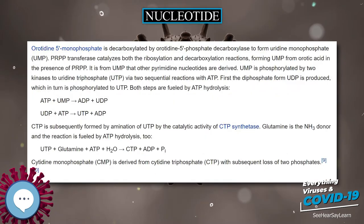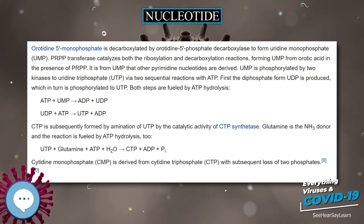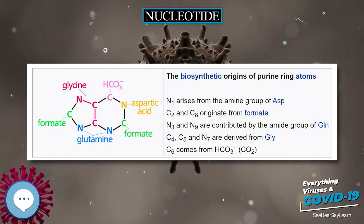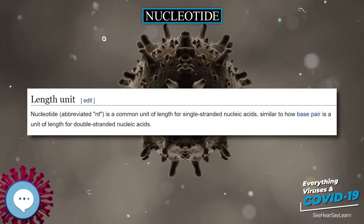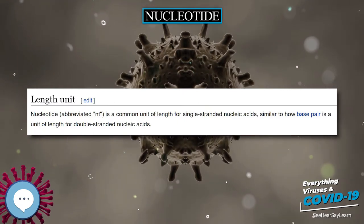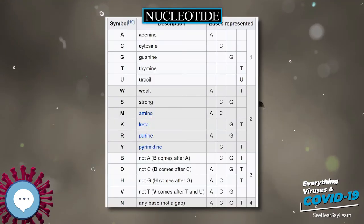In experimental biochemistry, nucleotides can be radiolabeled with radionuclides to yield radionucleotides. Structurally, a nucleotide is composed of three distinctive chemical subunits: a five-carbon sugar molecule and a nitrogenous base — which together are called a nucleoside — and one phosphate group.